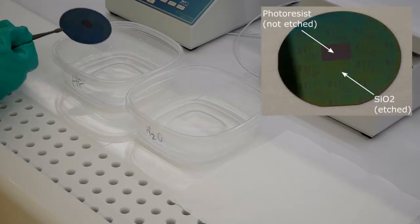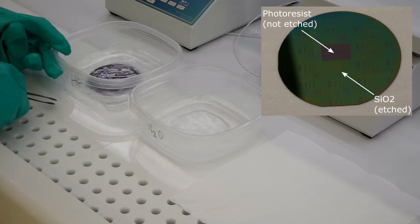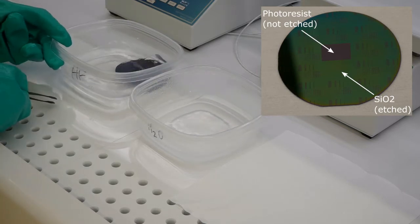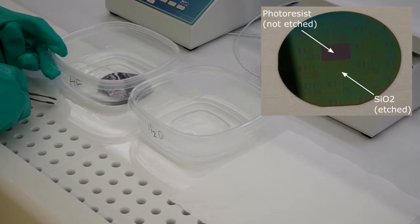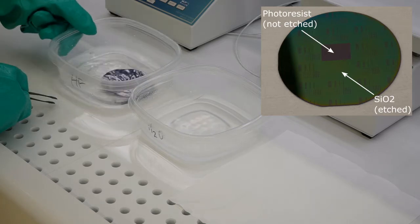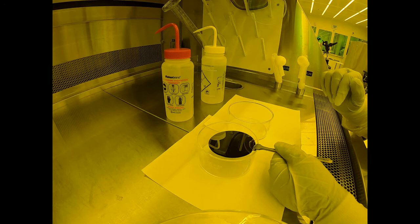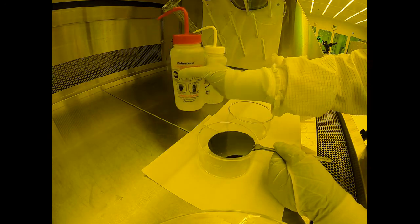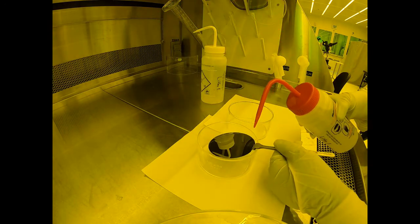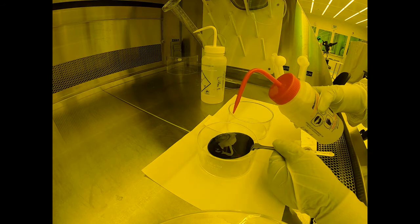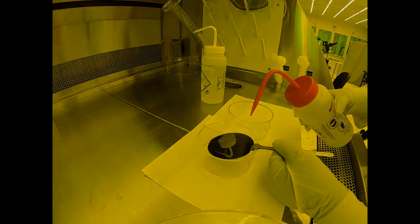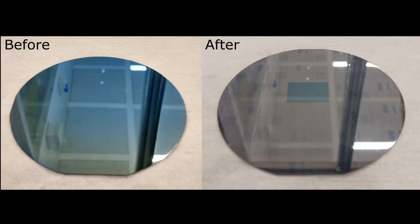When we place a wafer patterned with photoresist into the acid, only the parts that are not covered by the photoresist are etched. This leaves behind the desired pattern in SiO2. Then we can remove the photoresist by wet etching or rinsing it with acetone, leaving behind our pattern in Si and SiO2. Here is a sample of SiO2 on silicon before and after wet etching.